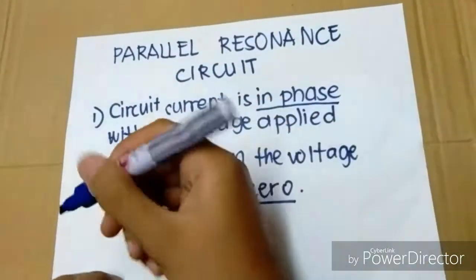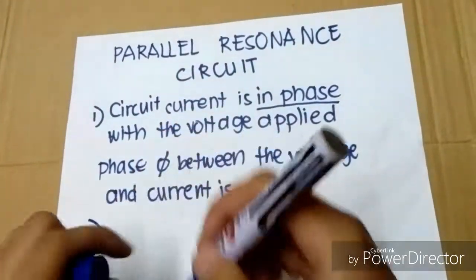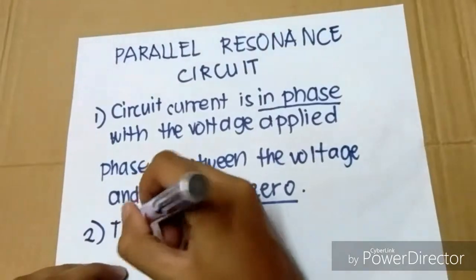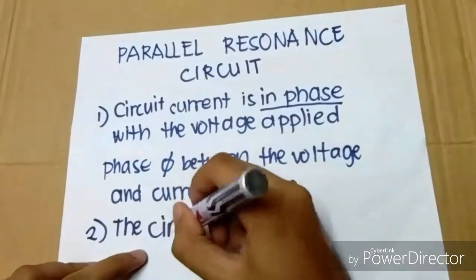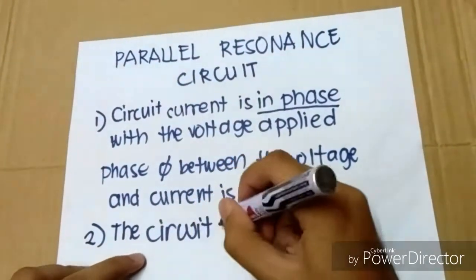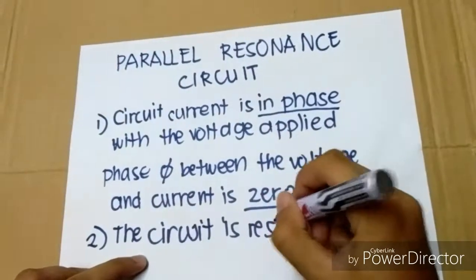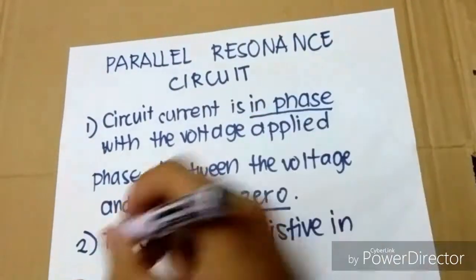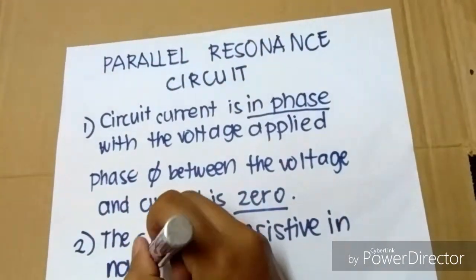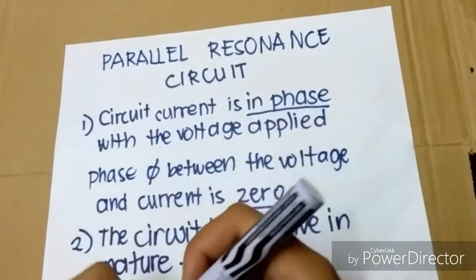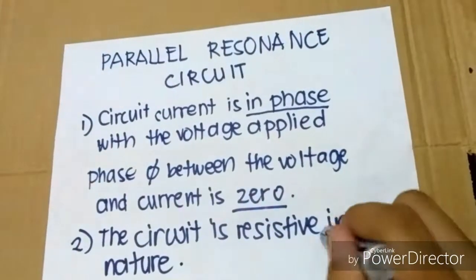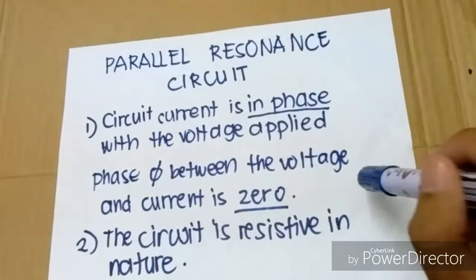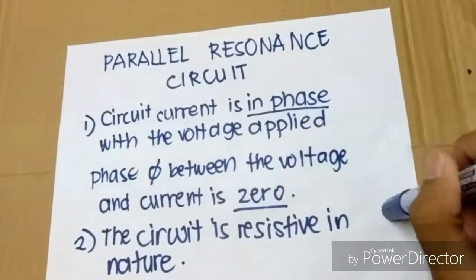Next, the circuit is resistive in nature. The circuit is resistive in nature because the phase angle between the voltage and current is zero.